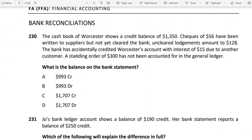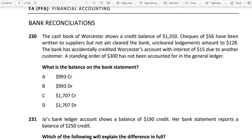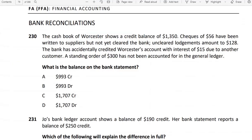The bank has accidentally credited Worcester's account with interest belonging to another customer. We need to fix this in the bank statement. Since the bank has incorrectly increased our balance, we will do a debit adjustment, which means minus.